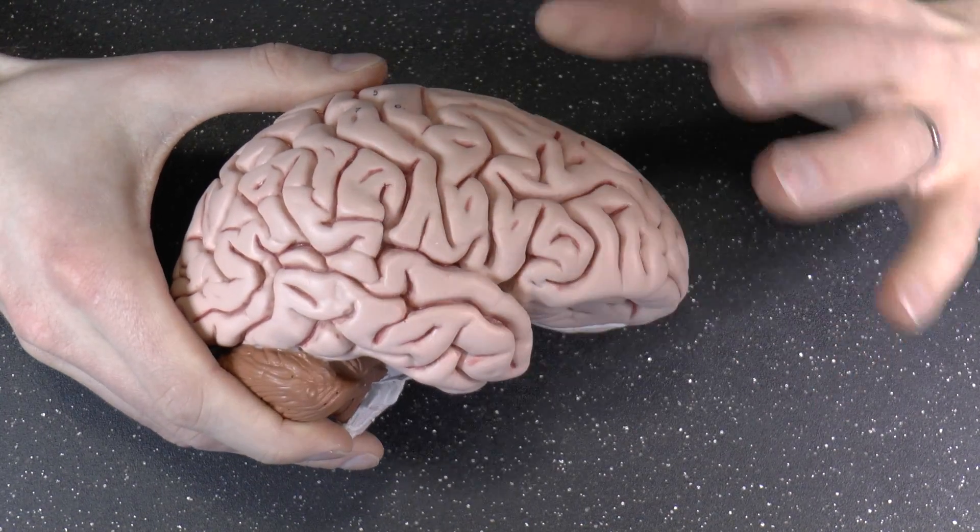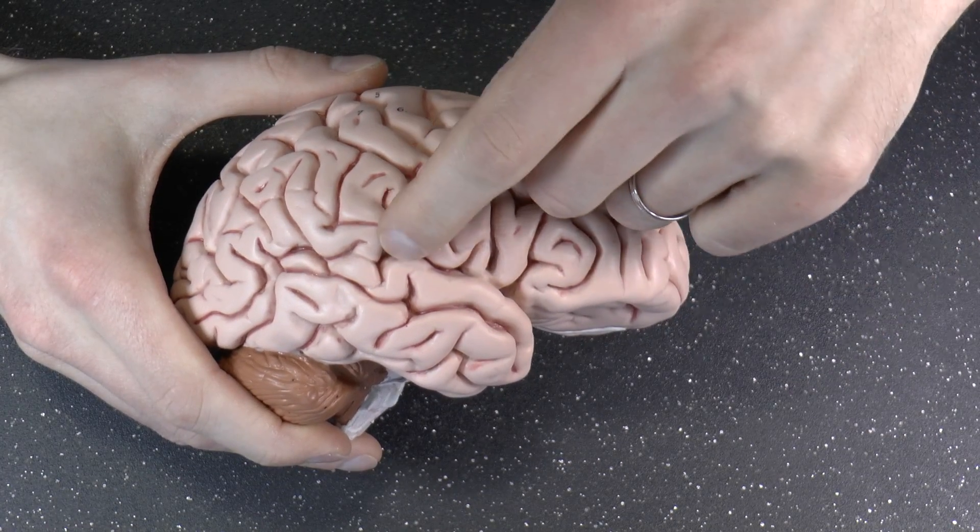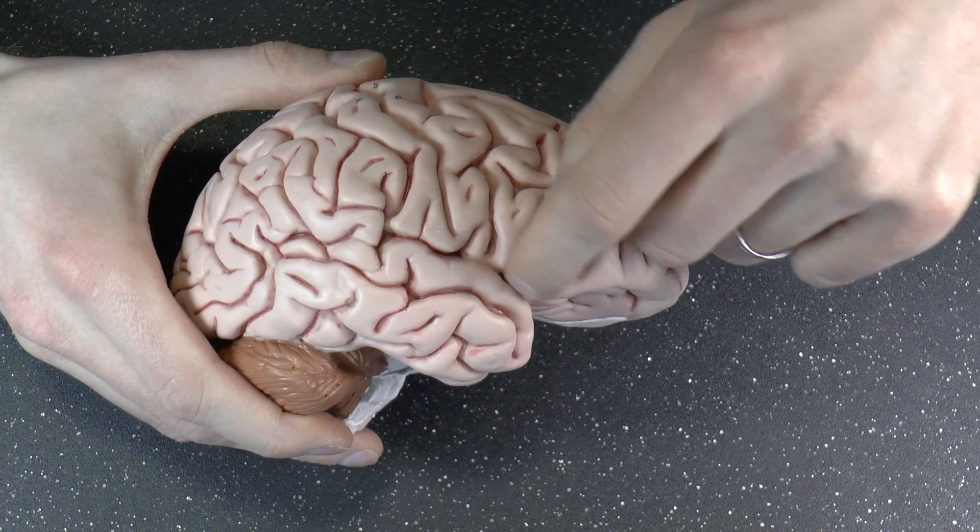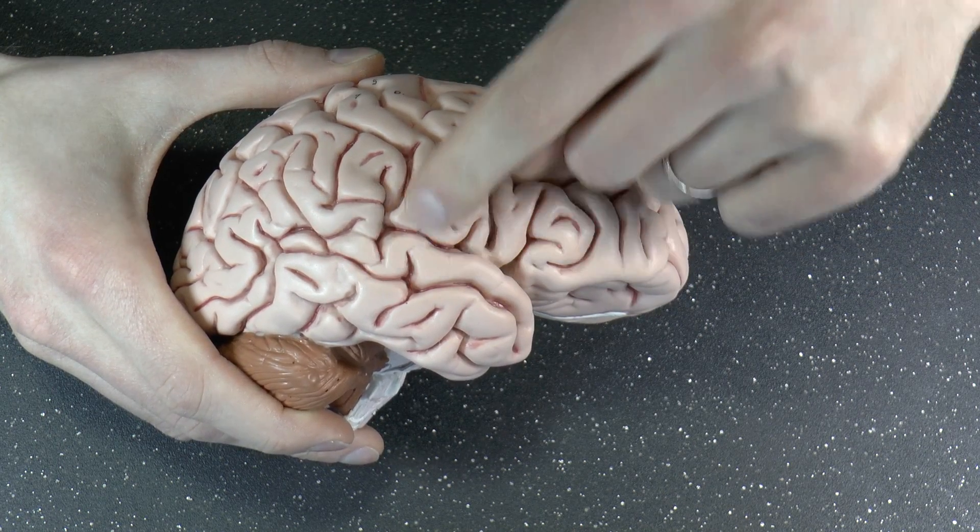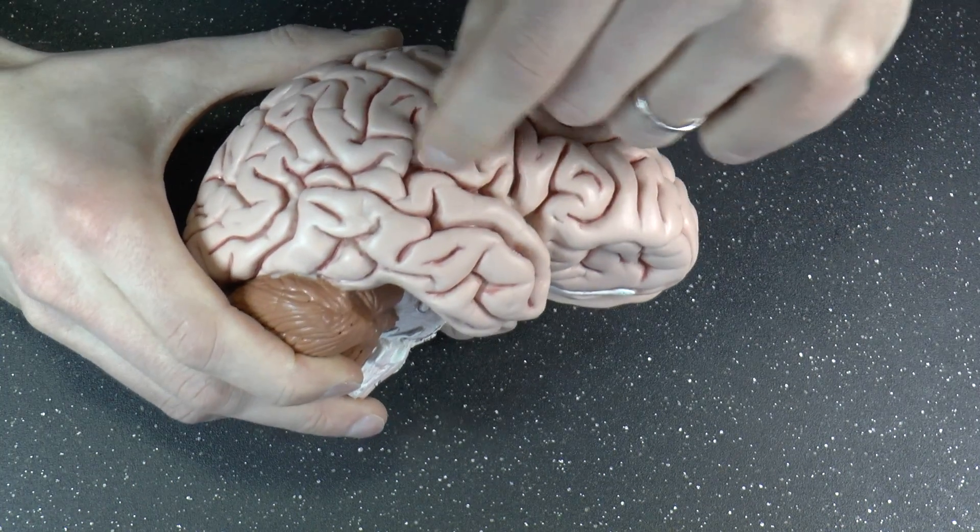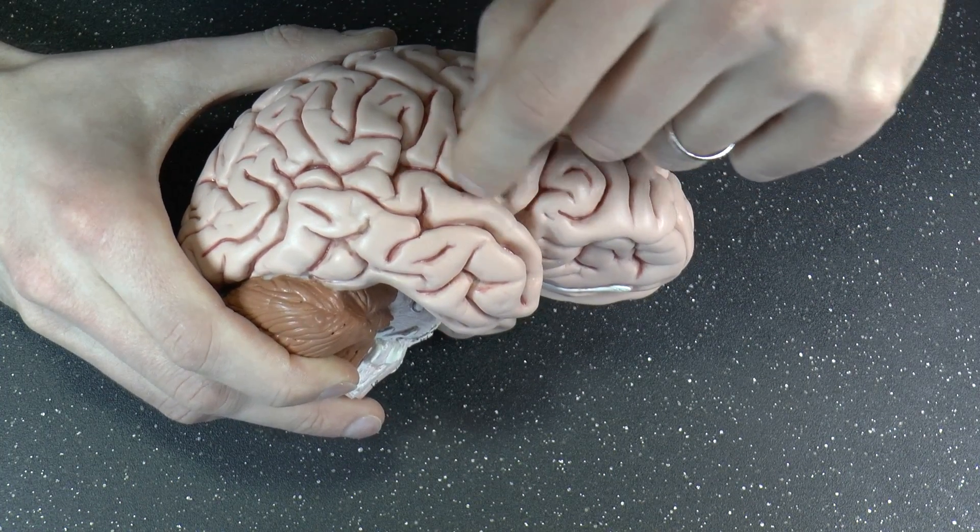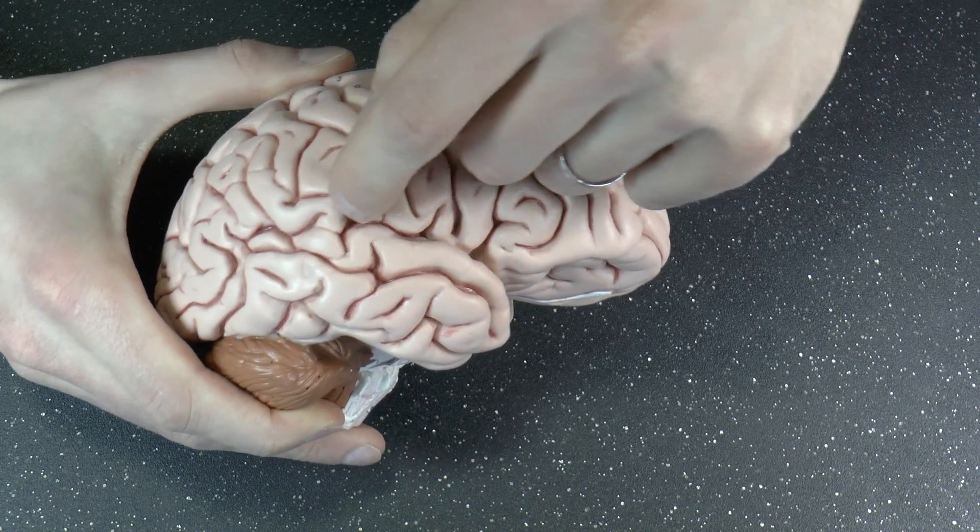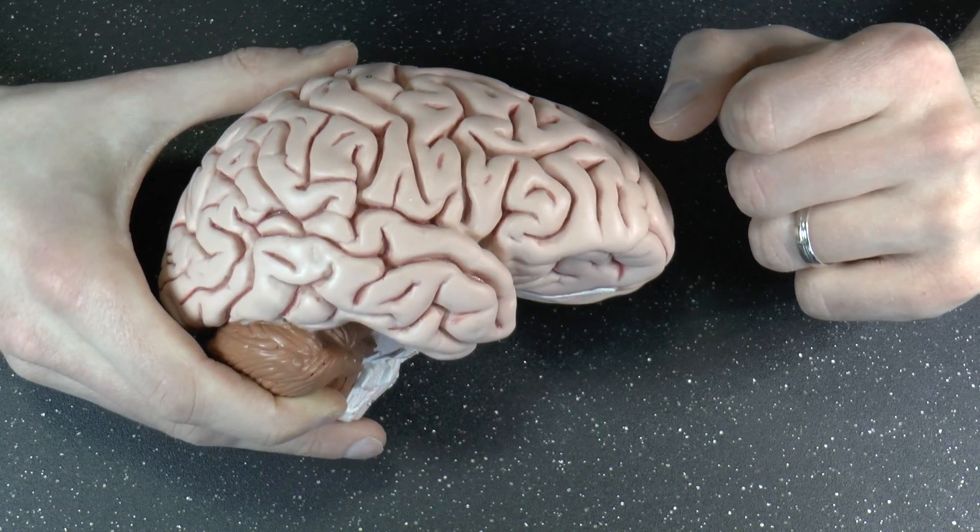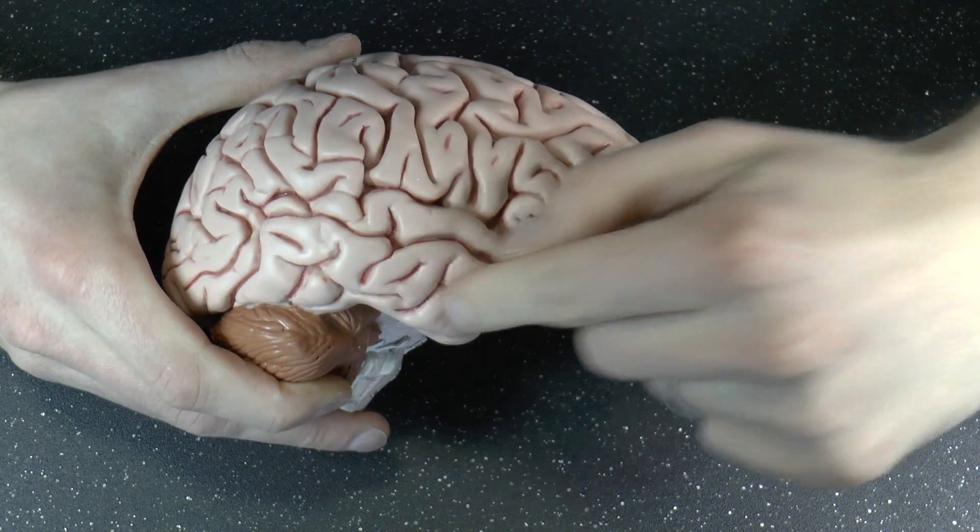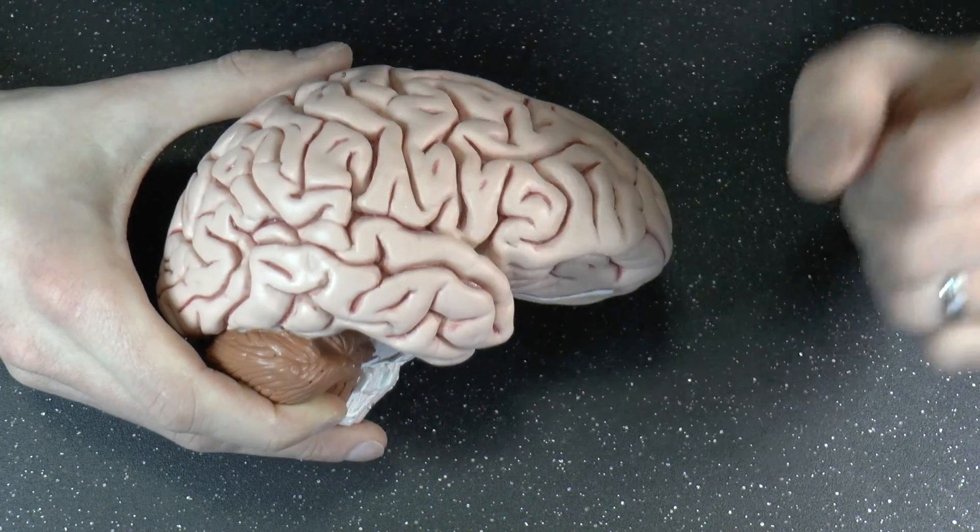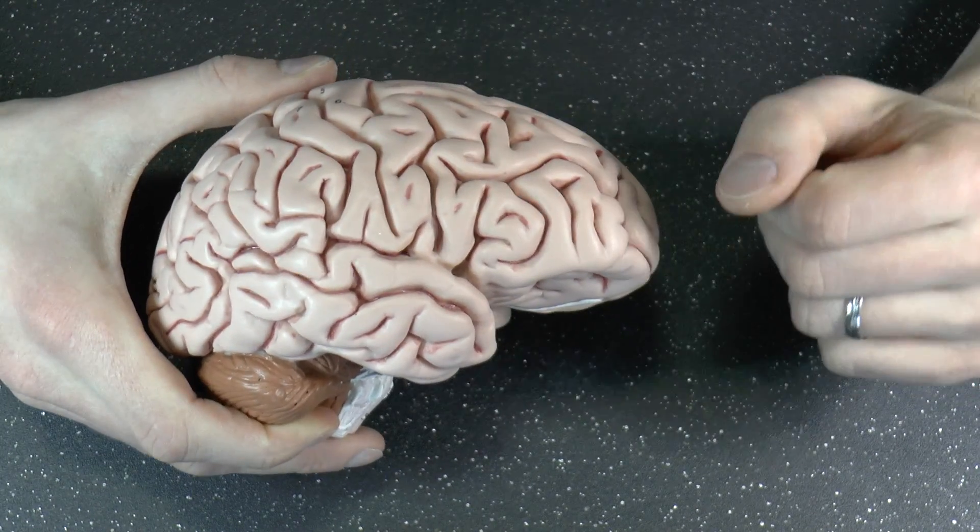Now, how do you know where one part, one lobe starts and the other ends? Well, first of all, the temporal lobe is really easy. You see this big sulcus here? A sulcus is a groove, right? And a gyrus is a ridge like this, but a sulcus is a groove like that. Here you have the lateral sulcus, and the lateral sulcus is also known as the sylvian fissure. And that separates the temporal lobe from the frontal lobe, and partially the parietal lobe. Now, that one's easy to spot, because it's so big.